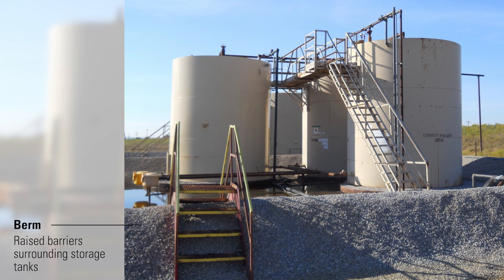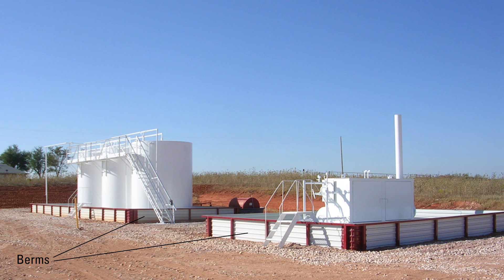Berms are constructed around the storage tanks to lessen the impact to the environment in case of an accident. Those accidents can be from natural causes like wind and storms, or they can also be man-made. This picture shows the effort some producers take in order to be a good neighbor to those who are sharing resources on top of the ground.